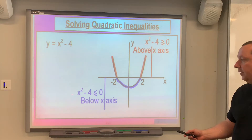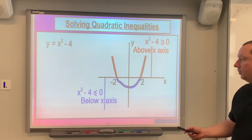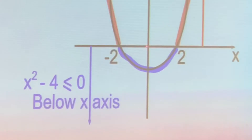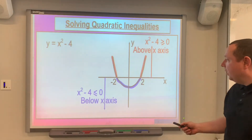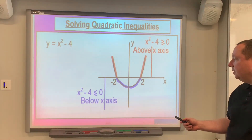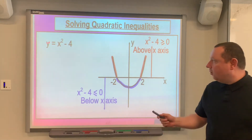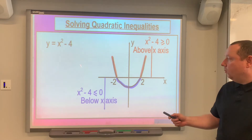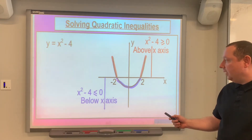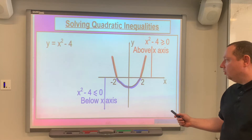Similarly, when is x squared minus 4 less than or equal to 0? If I look at the y-axis, the numbers get smaller, less than 0 as I go down. So just the bit below the x-axis is when the graph is less than or equal to 0. The only bit drawn underneath the x-axis is the bit in blue, and the solutions are between minus 2 and 2.